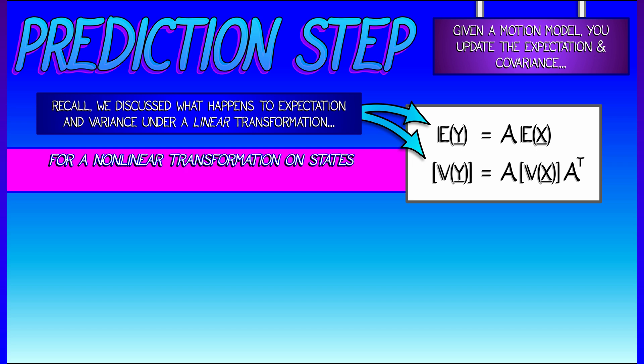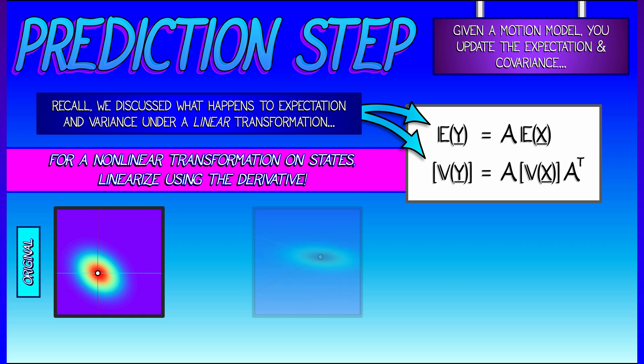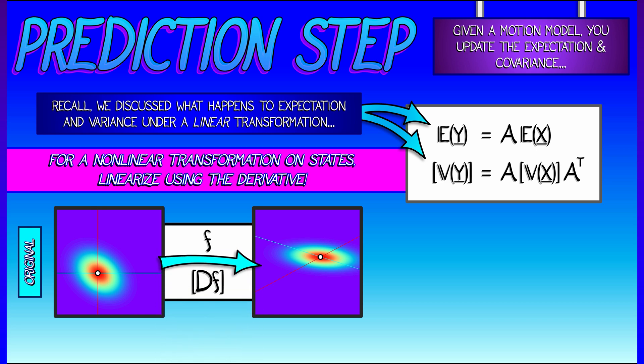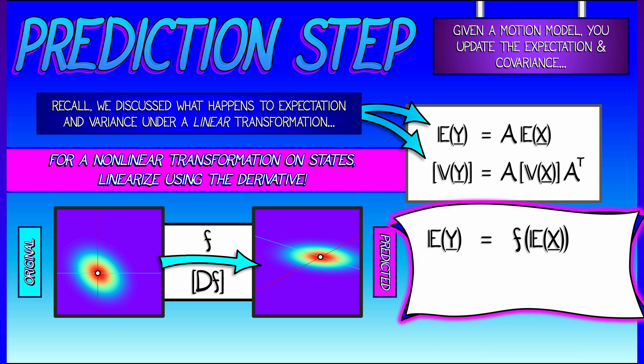Well, of course, it's the same story that we've been telling all along. We use the derivative as a linearization of this nonlinear transformation. So we're going to say that under this nonlinear state update model f, the expectation of y is f of the expectation of x.